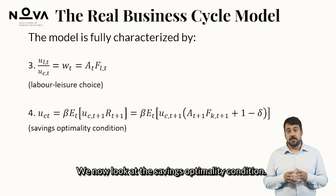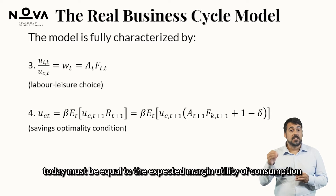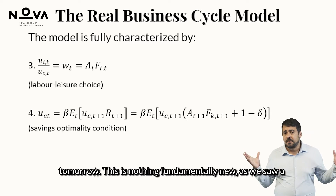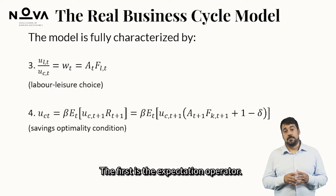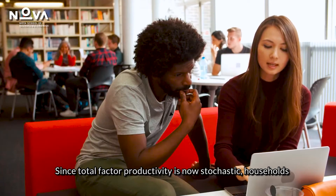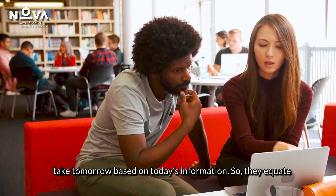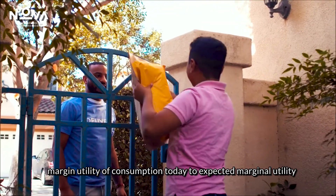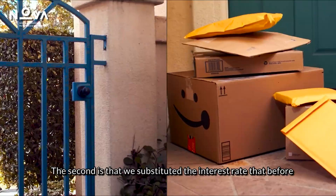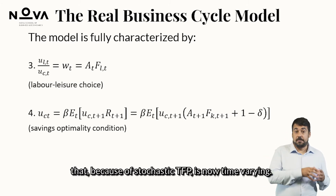We now look at the savings optimality condition. The equation states that the marginal utility of consumption today must equal the expected marginal utility of consumption tomorrow. There are two novelties here compared to the life cycle model. First, the expectation operator: since TFP is now stochastic, households assign probabilities to different values TFP can take tomorrow, equating marginal utility of consumption today to expected marginal utility tomorrow. Second, we substitute the previously exogenous and constant interest rate with the marginal product of capital, which — because of stochastic TFP — is now time varying.